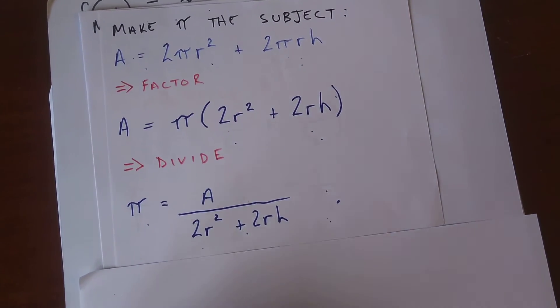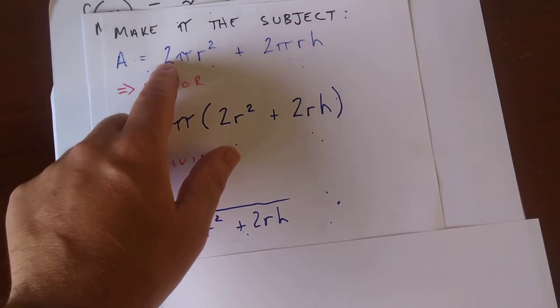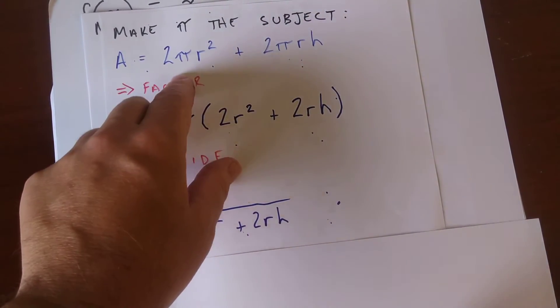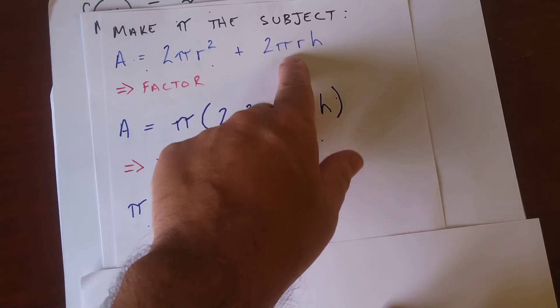By the way, a quick fun fact, this is the way you find the surface area of a cylinder, 2 times the area of each base plus the circumference of the base.